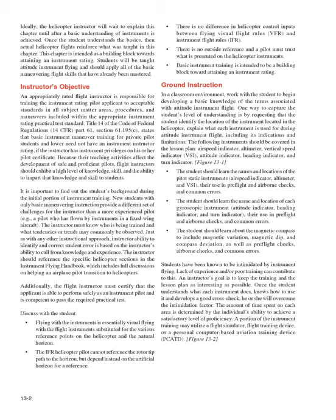Ground Instruction in a Classroom Environment: Work with the student to begin developing a basic knowledge of the terms associated with attitude instrument flight. One way to capture the student's level of understanding is by requesting that the student identify the location of each instrument in the helicopter. Explain what each instrument is used for during attitude instrument flight, including its indications and limitations. The following instruments should be covered in the lesson plan: airspeed indicator, altimeter, vertical speed indicator (VSI), attitude indicator, heading indicator, and turn indicator. (Figure 13-1)